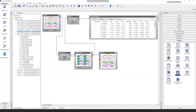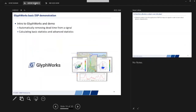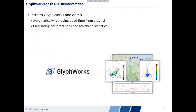That was Glyphworks — a very simple use case, but you can see how quickly we can build a rather robust and complicated process with very few simple steps. If you think of how long something like that would have taken in Excel or MATLAB, you can really appreciate the amount of processing that went on and how easy it was to calculate something like that.